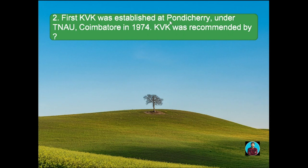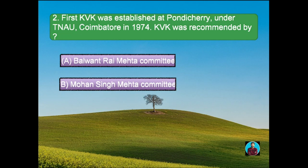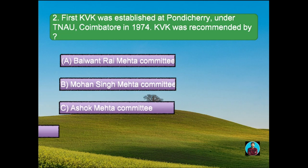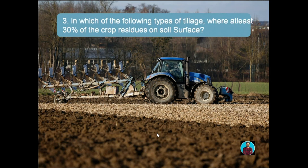Question number two: the first KVK was established at Pondicherry under TNAU at Coimbatore in 1974. KVK was recommended by which committee? Option A: Balvant Rai Mehta Committee, Option B: Mohan Singh Mehta Committee, Option C: Ashok Mehta Committee, Option D: Shivaraman Committee. The right answer is Mohan Singh Mehta Committee. Note: the Shivaraman Committee is also important as it recommended the establishment of NABARD.